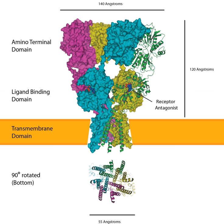In the constitutive pathway, GluA-1-lacking AMPA receptors — usually GluR-2/GluR-3 heteromeric receptors — replace the GluA-1-containing receptors in a one-for-one, activity-independent manner, preserving the total number of AMPA receptors in the synapse. This pathway is responsible for the maintenance of new memories, sustaining the transient changes resulting from the regulated pathway. Under basal conditions, this pathway is routinely active, as it is also necessary for the replacement of damaged receptors.